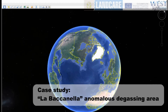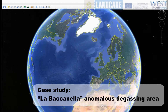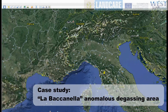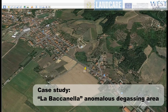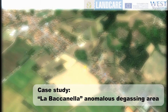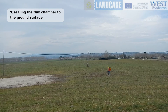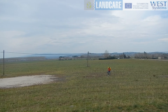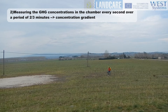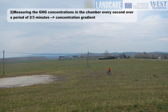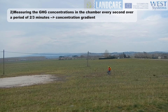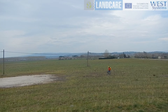La Baccanella represents a practical example of an anomalous degassing area. Let's measure diffuse emissions with West Systems' portable flux meter in several points of this area. Let's seal the flux chamber to the ground surface and take the measurement. GHG concentrations in the chamber are measured every second over a period of 2 to 3 minutes. The concentration versus time curves are fitted by applying a linear best fit to compute the concentration gradient.